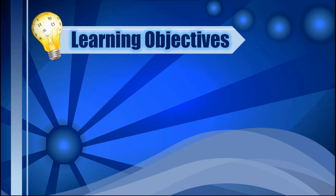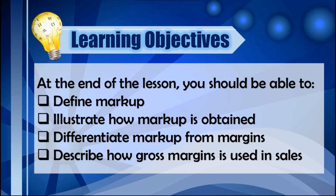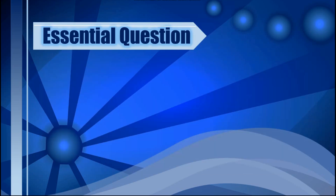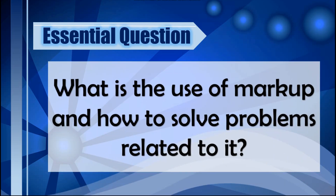For this lesson, the learning objectives are the following: you should be able to define markup, illustrate how markup is obtained, differentiate markup from margins, and describe how gross margin is used in sales. To attain the learning objectives, we need to answer the essential question: what is the use of markup, and how to solve problems related to it?